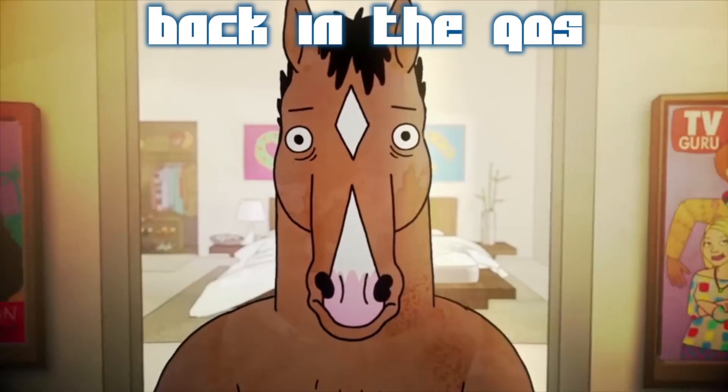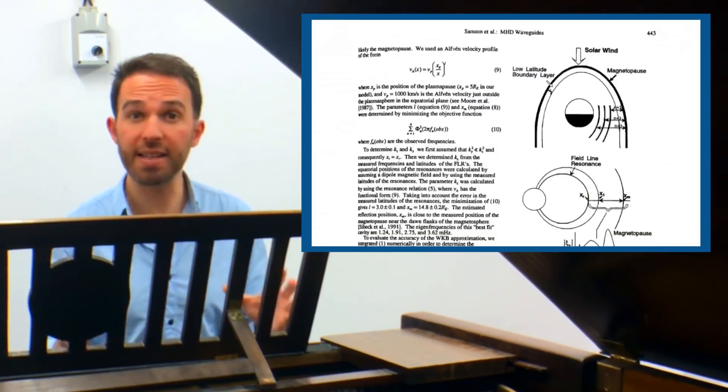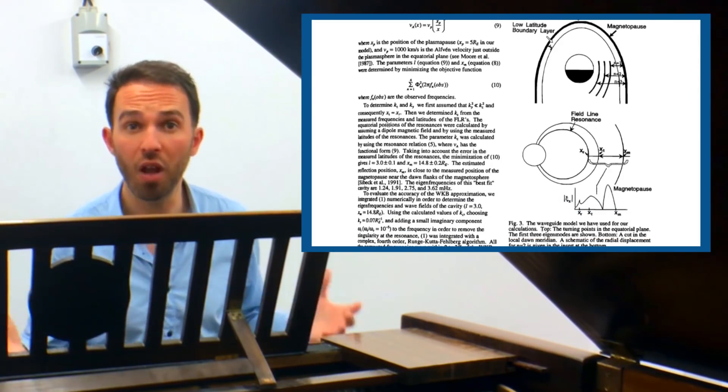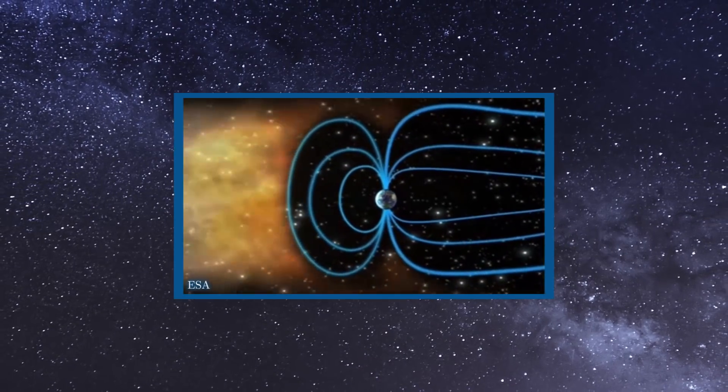Back in the 90s when I was probably listening to the Spice Girls and watching Friends, the idea was put forward that Earth's magnetosphere had a set of modes, the frequencies it liked to oscillate at. This was supported by the small amount of data we had available at the time, but was a bit of a question.